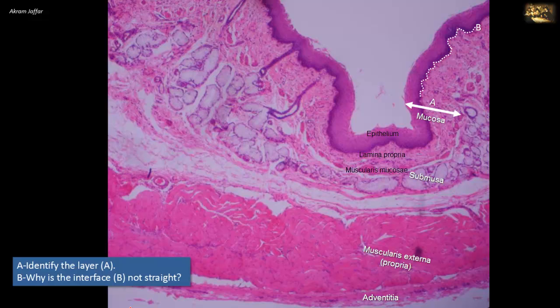In the gut tube, this type of epithelium is found in the oral cavity, pharynx, esophagus, and anal canal, and it serves as protective. This is a section of the esophagus. The undulations between the epithelium and connective tissue of the lamina propria, reflected in the dotted line B, increase the surface area of the interface and may provide better attachment.